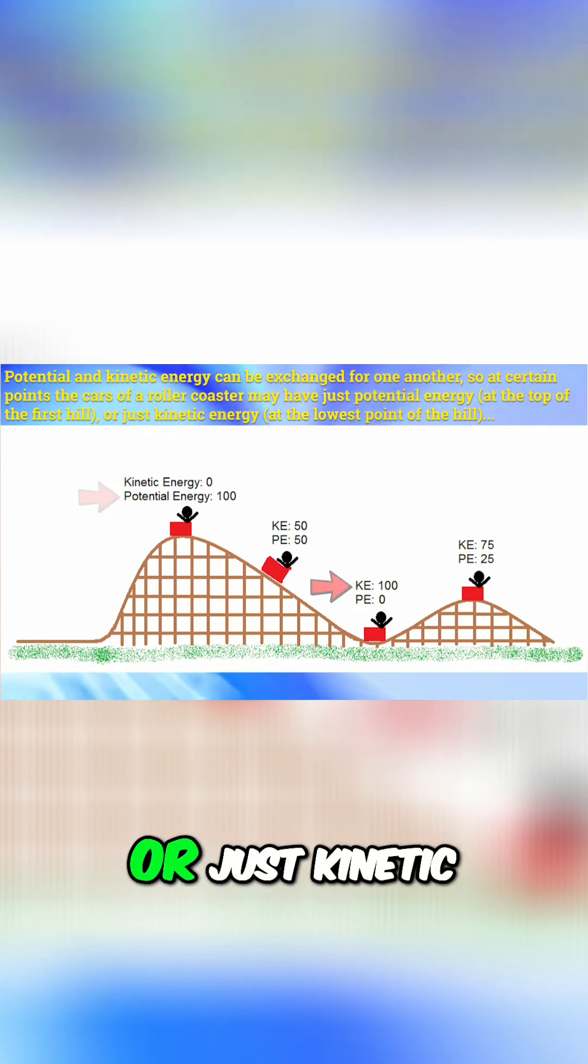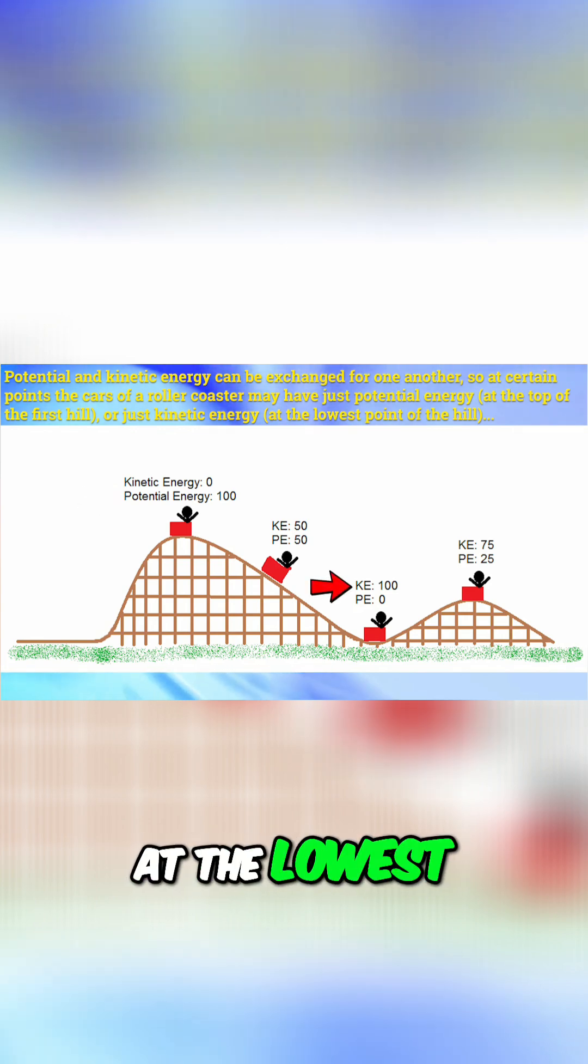Potential and kinetic energy can be exchanged for one another. So at certain points, the cars of a roller coaster may have just potential energy at the top of the first hill or just kinetic energy at the lowest part of the hill, or some combination of kinetic and potential energy at all other points.